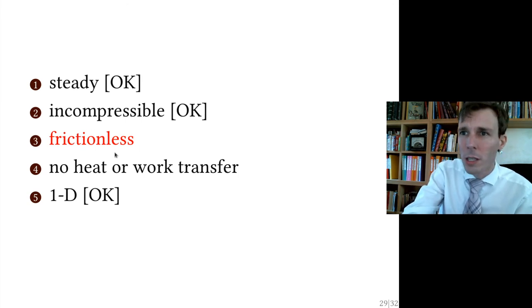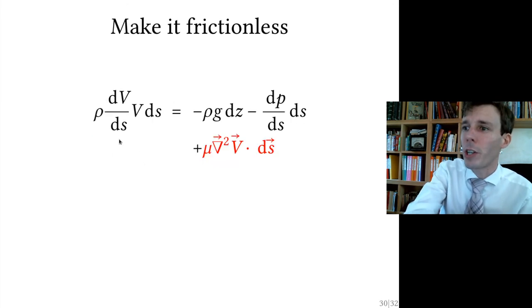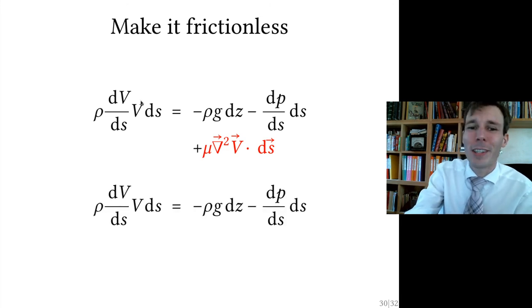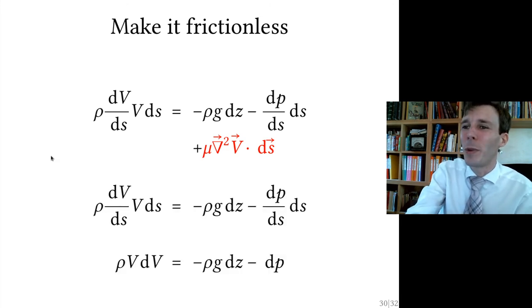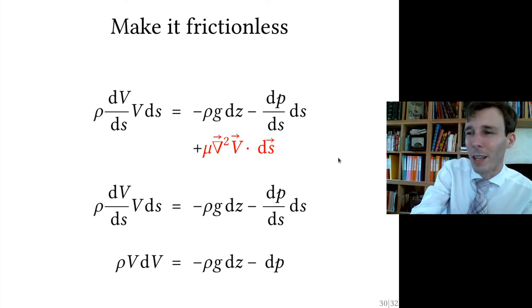Then we make it frictionless. And if the flow is frictionless, then you can remove viscosity. Viscosity will have no effect. So we're just left with three terms here. Then we can just remove the ds terms. So we get something that looks like velocity times the change in velocity equals rho g times the change in altitude minus a little bit of delta pressure. So it looks like something familiar already.